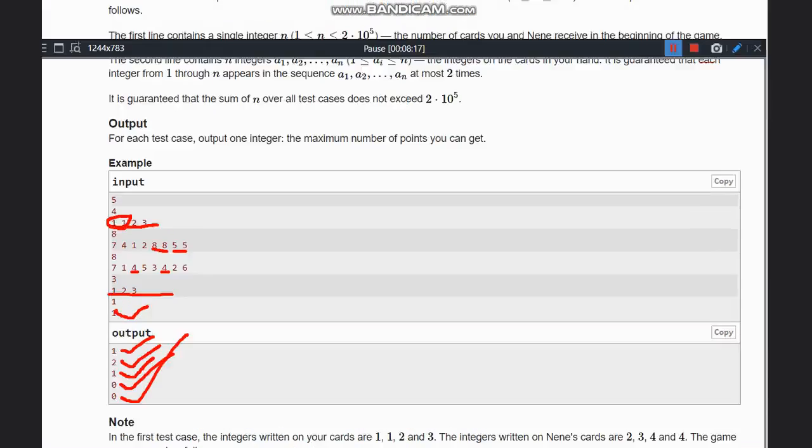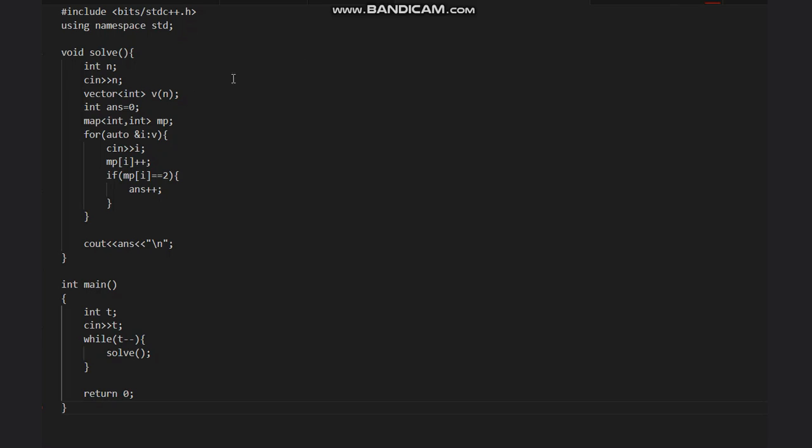Wherever the frequency of the elements is 2, increment the answer, and that's the solution. So let's look at the code. This is the code. What we are doing is taking the input of the numbers and n as mentioned.